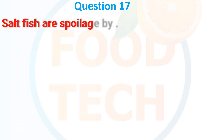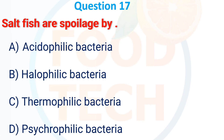Salt fish are spoiled by: A, acetophilic bacteria; B, halophilic bacteria; C, thermophilic bacteria; D, psychrophilic bacteria. The answer is B, halophilic bacteria.